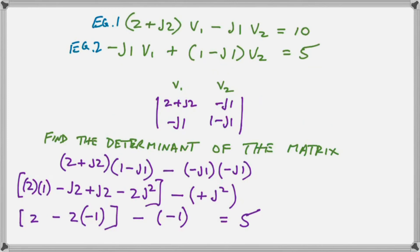So, we have equation 1 and 2 and we're going to solve it using Kramer's rule. So, we rearrange our determinant matrix for V1 and V2 and we show you there the steps to how to find the determinant of the matrix and it works out to the real number 5.